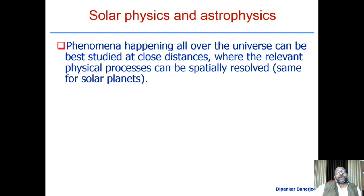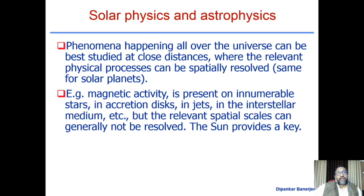The sun possesses a lot of magnetic field that changes with time — both on short and long time scales. Magnetic activity is present in innumerable stars, accretion disks, jets, and interstellar medium, but the relevant physical spatial scales generally cannot be resolved. Since these objects are far away, we can't find the finer details inside those structures. The sun provides a key for this.